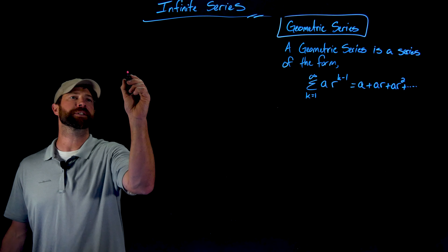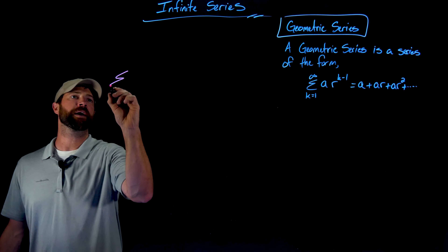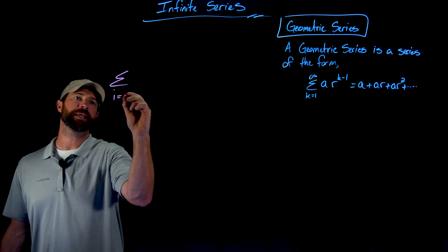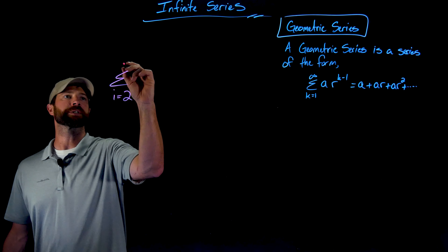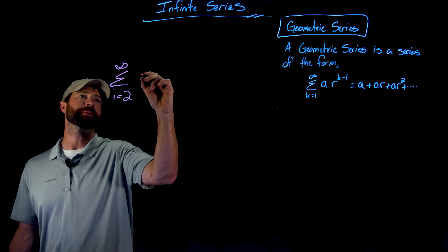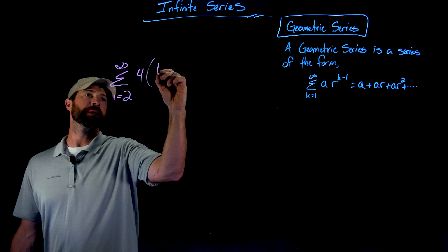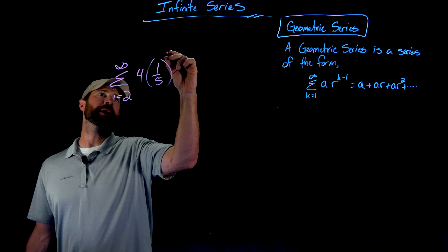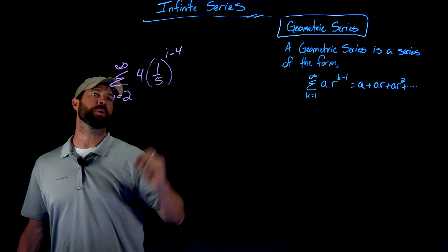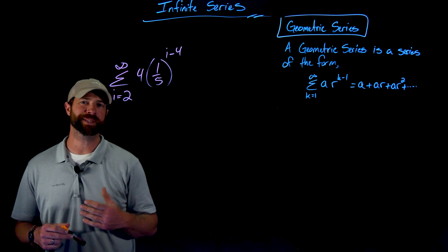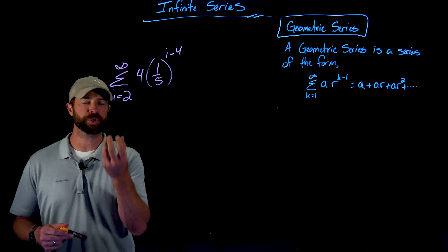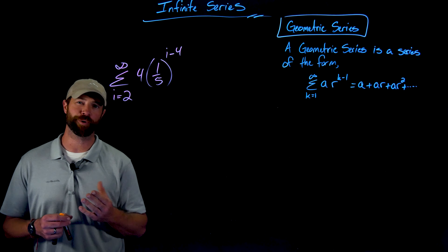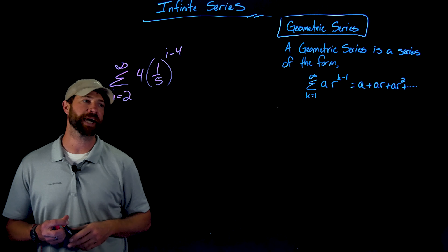So let's look at an infinite series. In this case, I'll go from i equals 2 to infinity. Let's say 4 times one-fifth to the i minus 4. What I'm about to do is a little arbitrary, but I just want to show you the power of manipulating these if you're trying to put it in a specific form, which you're going to have to do at times.